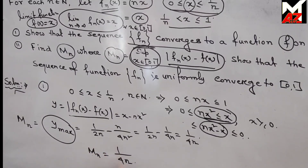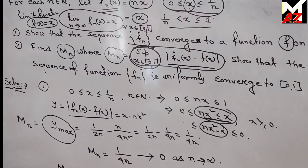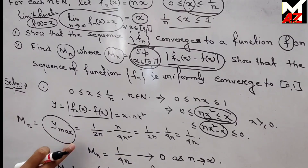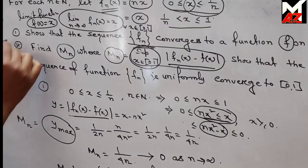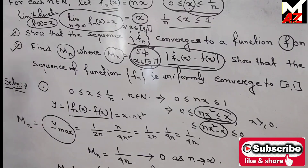So M_n = 1/(4n). By the M_n test — which is an if and only if theorem — since M_n = 1/(4n) tends to 0 as n tends to infinity, the sequence of functions f_n is uniformly convergent. This completes the solution of Problem 11. Thank you for watching.